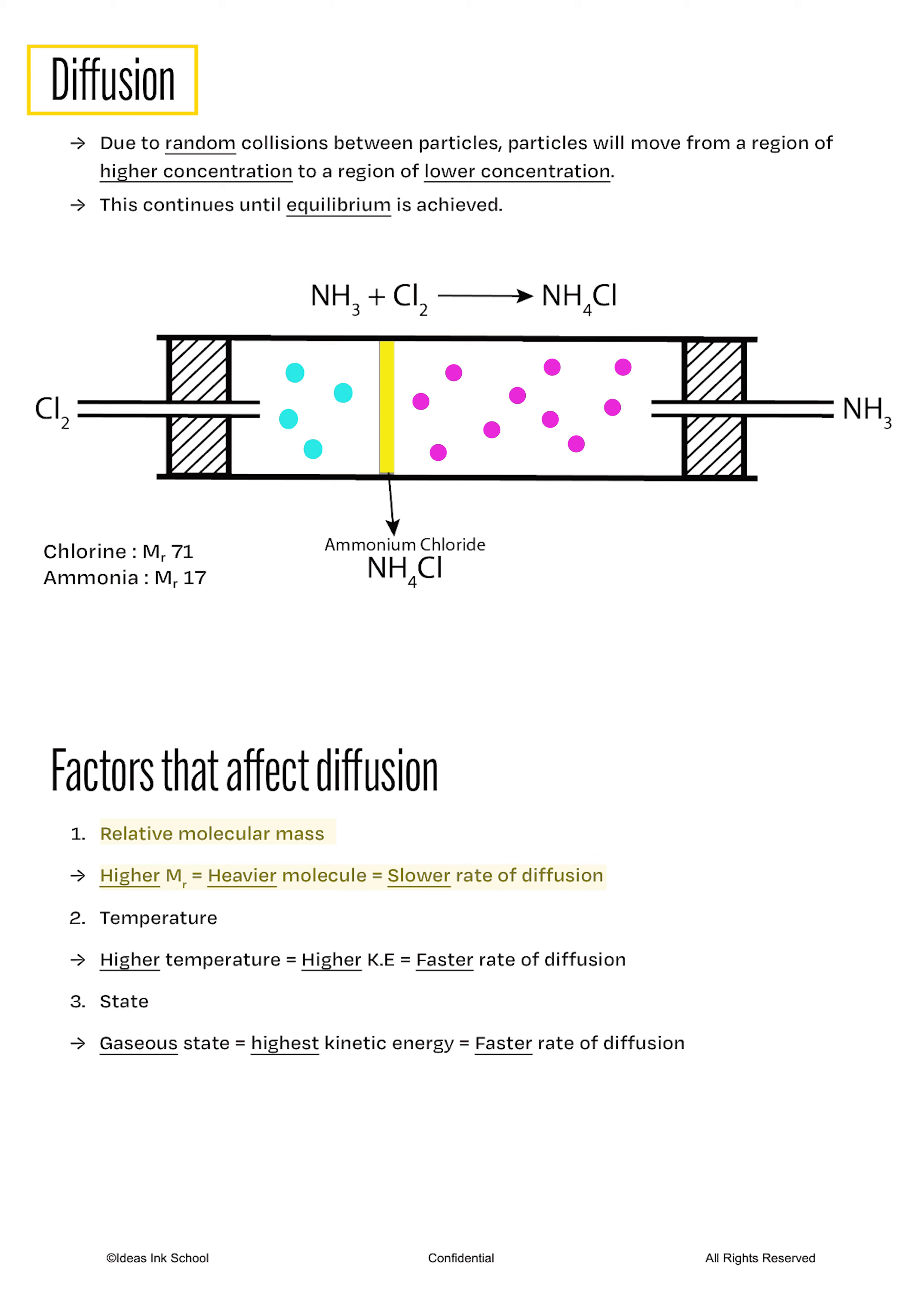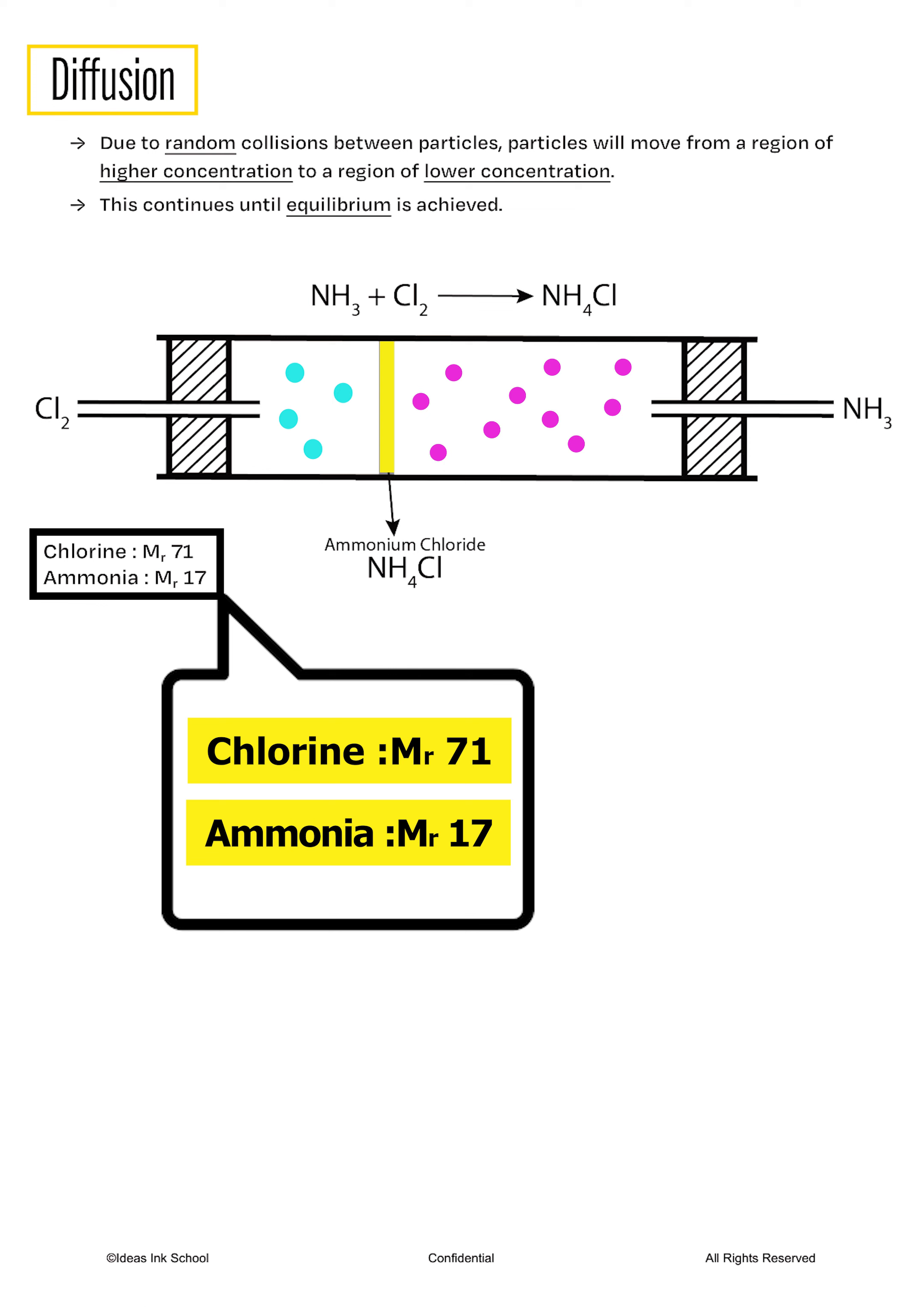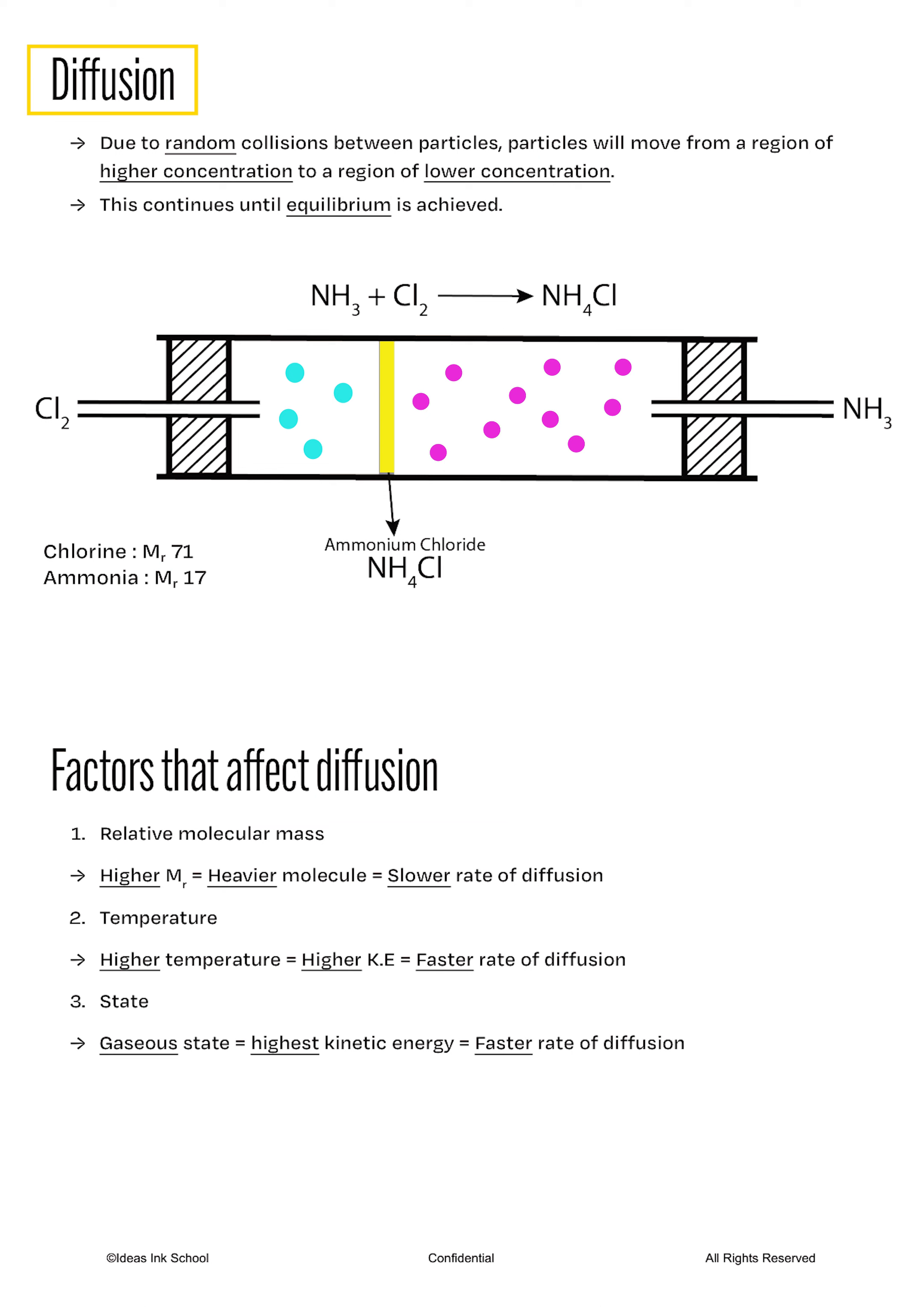Meaning that the higher the molecular mass, the heavier the molecule, thus the slower the rate of diffusion. Chlorine gas has a molecular mass of 71, while ammonia gas have a molecular mass of only 17. Therefore, chlorine gas, being the heavier gas, will diffuse at a much slower rate, about four times slower than ammonia. As a result, both gases meet at a location that is closer to the left side of the tube.